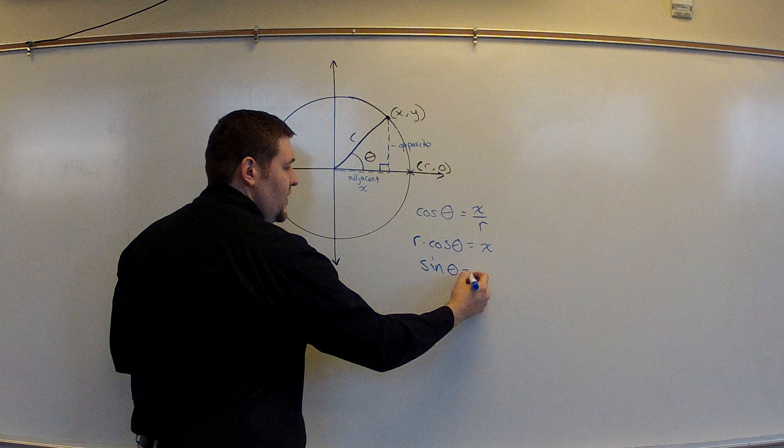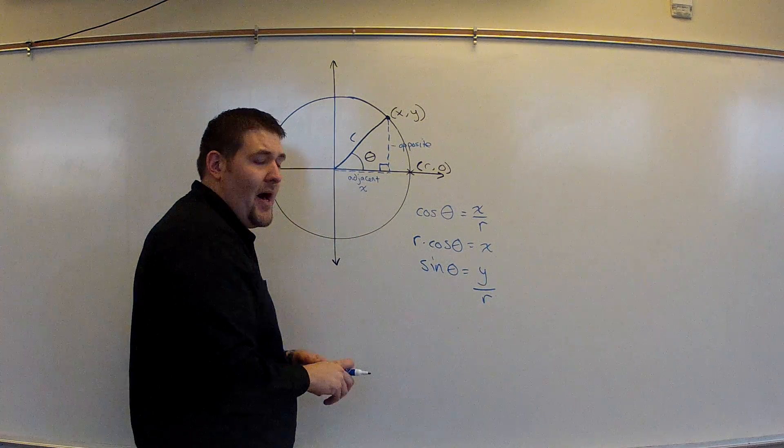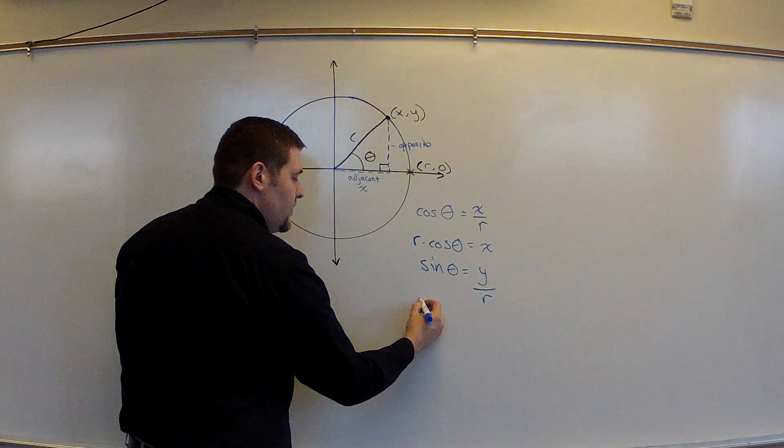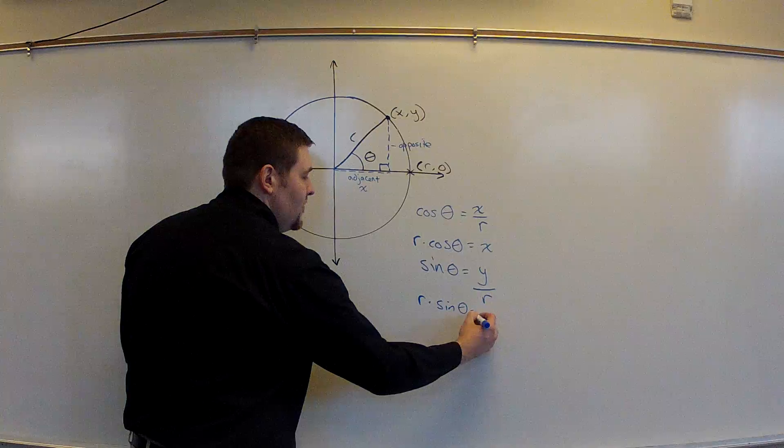Sine of theta will equal the y value, the vertical piece, over the radius of the hypotenuse. Solving this one also for y will yield radius times the sine of theta equals y.